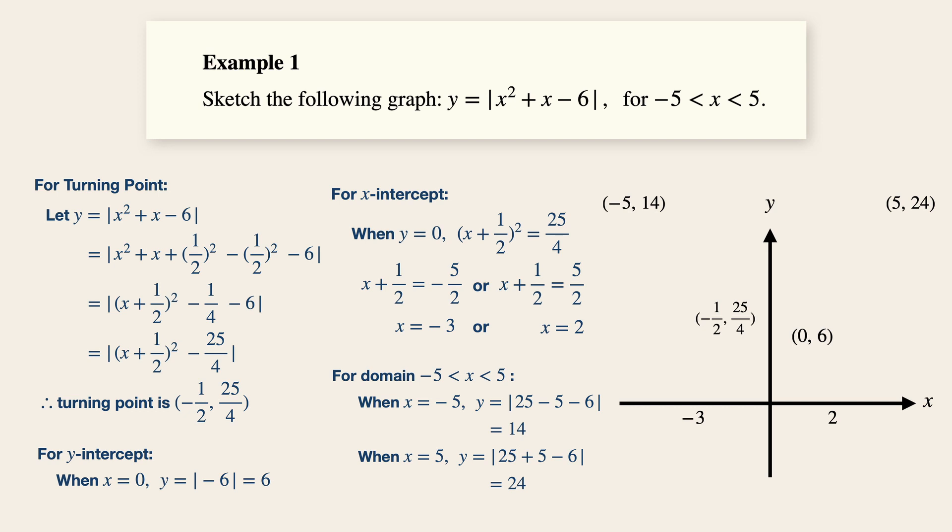Now, let's sketch the graph right now, which gives us this particular shape. And following which, don't forget to label the graph. And the domain is actually minus 5 is less than x is less than 5. So we will just put a circle over here to indicate that the value of minus 5 and 5 respectively are not inclusive.